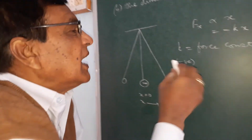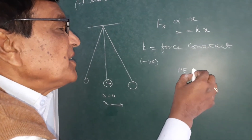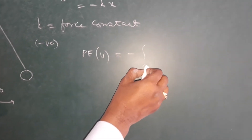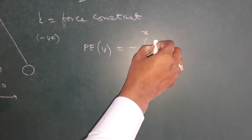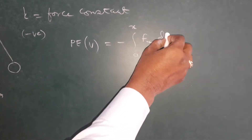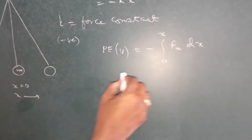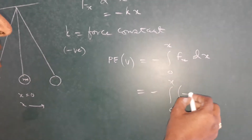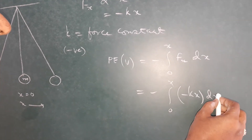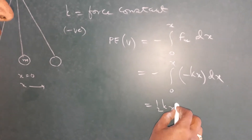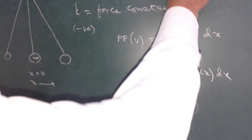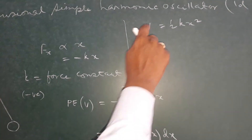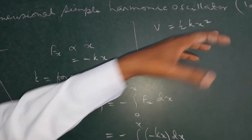The force law is F = −kx, where k is the force constant. The potential energy V can be calculated from this force: V = ∫₀ˣ (−kx) dx = ½kx². So the potential energy equals ½kx², which is parabolic in nature with displacement x.